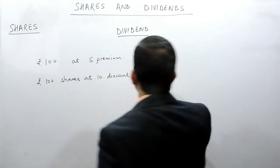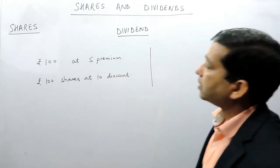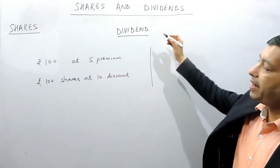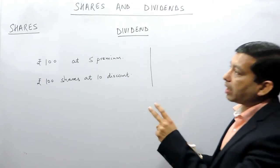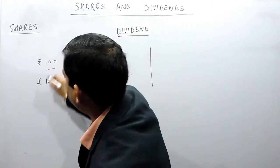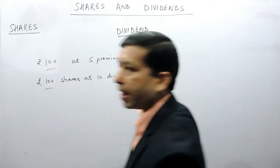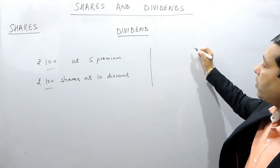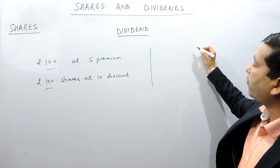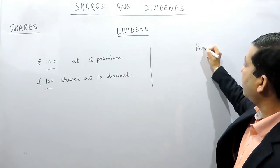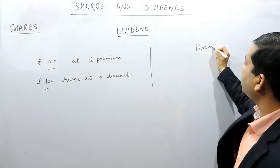Now when there is a dividend, it can be calculated from two perspectives: from the company's point of view, that is on Rs.100, and from the point of view of the person who is the shareholder.